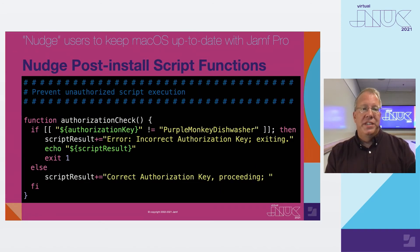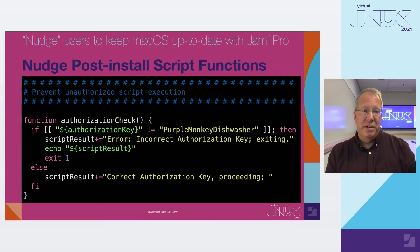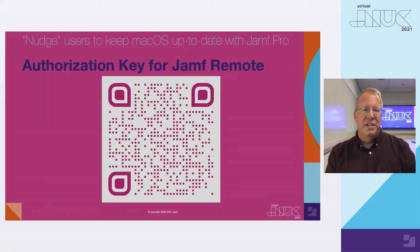We allow our upper-tier TSRs to execute scripts via Jamf Remote, but we don't allow them to view the actual scripts in Jamf Pro. Occasionally a TSR will execute a script via Jamf Remote that I really wish they hadn't. So we came up with an authorization key for our more impactful scripts. The concept is to use a script parameter to check for some random string of characters before allowing a script to execute. You'll add an if-then-else to your script which checks for some random string of characters — if the passed script parameter doesn't match, exit; if it does match, proceed. Here's a link to a Jamf Nation post with more detailed information.